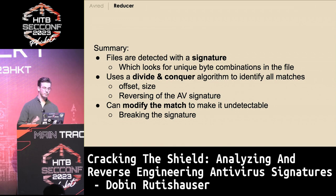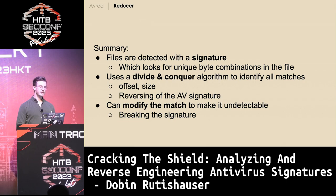Short summary: files are detected by a signature which looks for unique byte combinations in the file. You can use a divide and conquer algorithm to find these bytes and reverse the antivirus signature. Then we can modify the match either in the binary or in the source code to make it undetected.